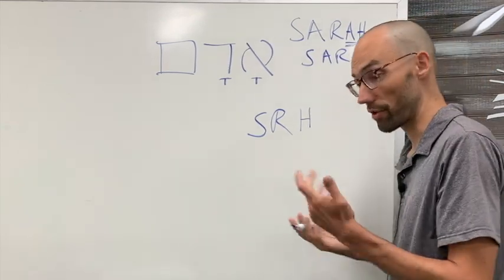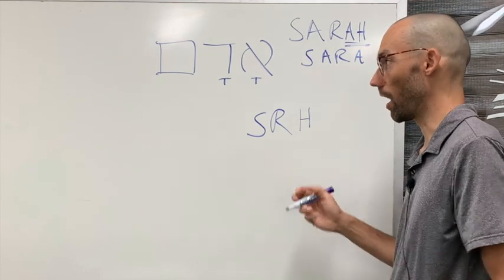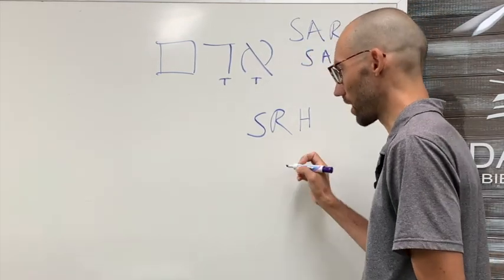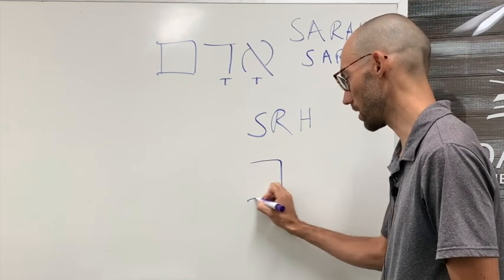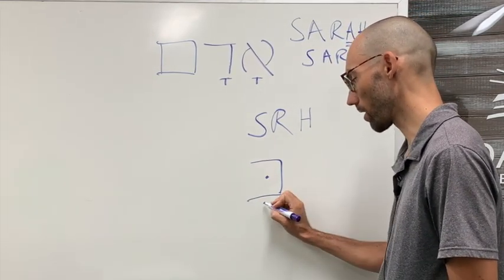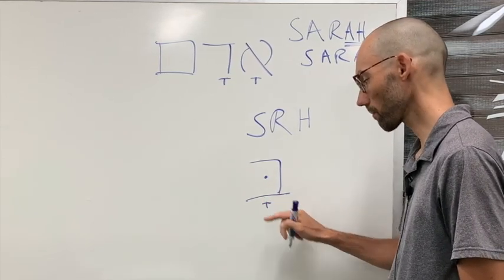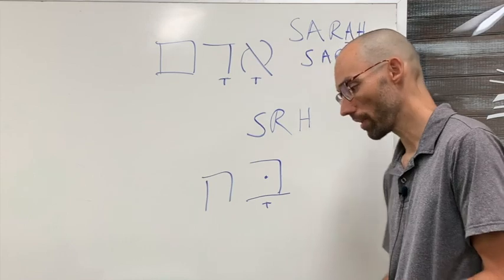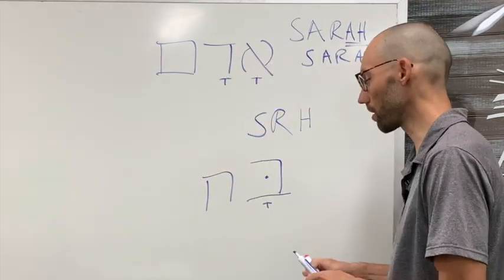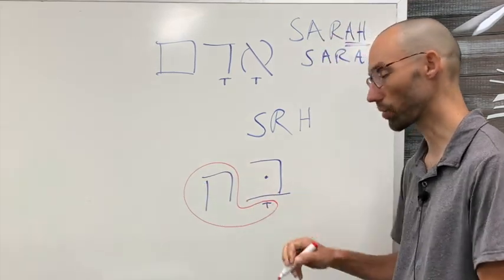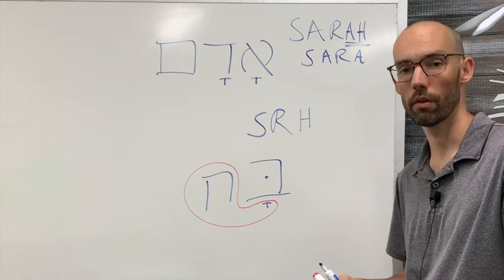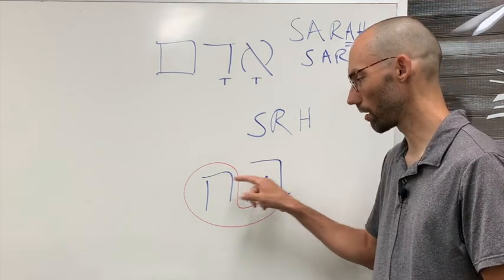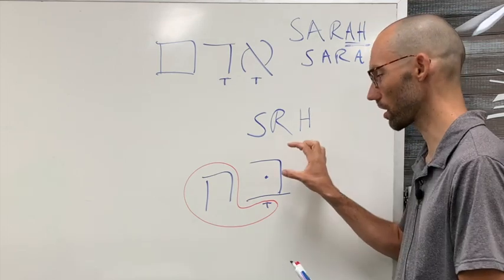That's our next vowel that we're going to learn. We had the Kamatz, and then when this works together with a Hey, it's called a Kamatz Hey. I'll take an example consonant. Let's just say Bet. We'll put a dot in it to make it a B sound. You add a Kamatz, and you've got bah. Now, sometimes, you'll see a Kamatz Hey, and it makes the same sound, bah. You have to remember, in your mind, think of it as that these two together, that's one vowel, a Kamatz Hey.